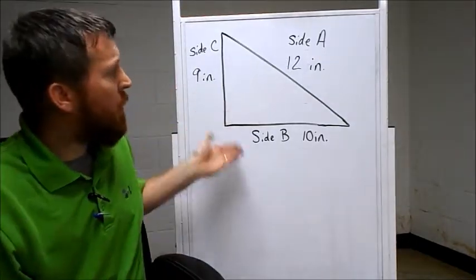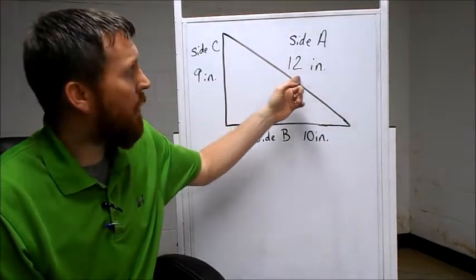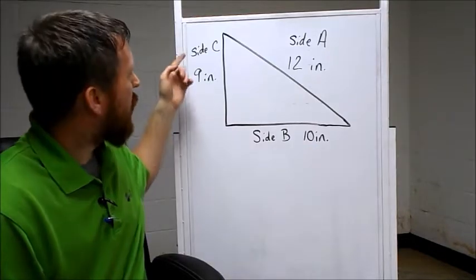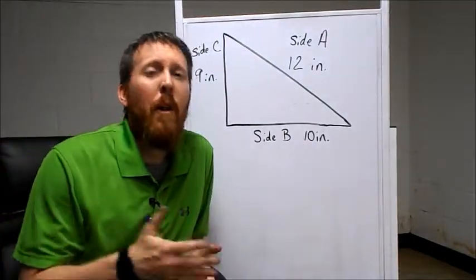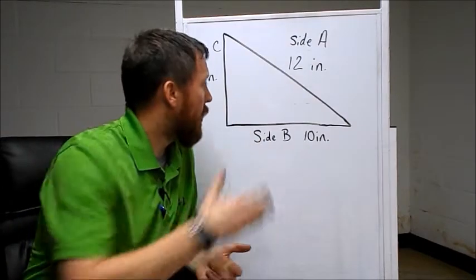As you can see, I've drawn a triangle and I've labeled the measurements for each side. We've got side A. It measures 12 inches. We got side B. It measures 10 inches. And we got side C. It measures 9 inches. I'm going to ask you some questions based off of our measurements that we have here.